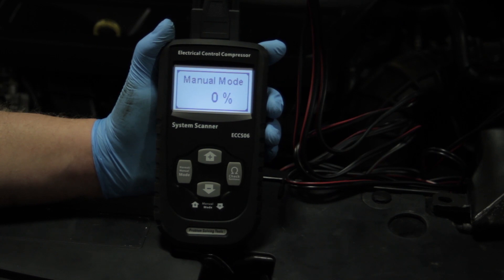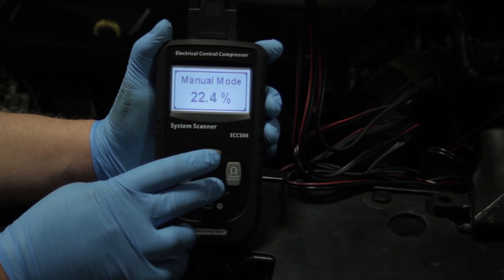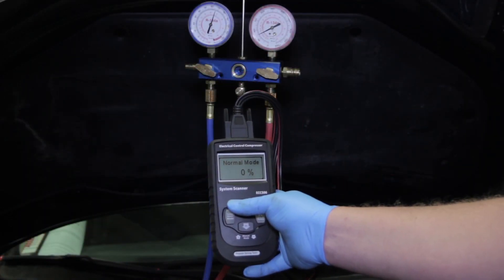I'm going to watch my pressure gauges and do the various ranges of control here on this particular vehicle. Now you can see we've got the vehicle running here. I've got my pressure gauges hooked up and I've got my TempSelect tool hooked up.